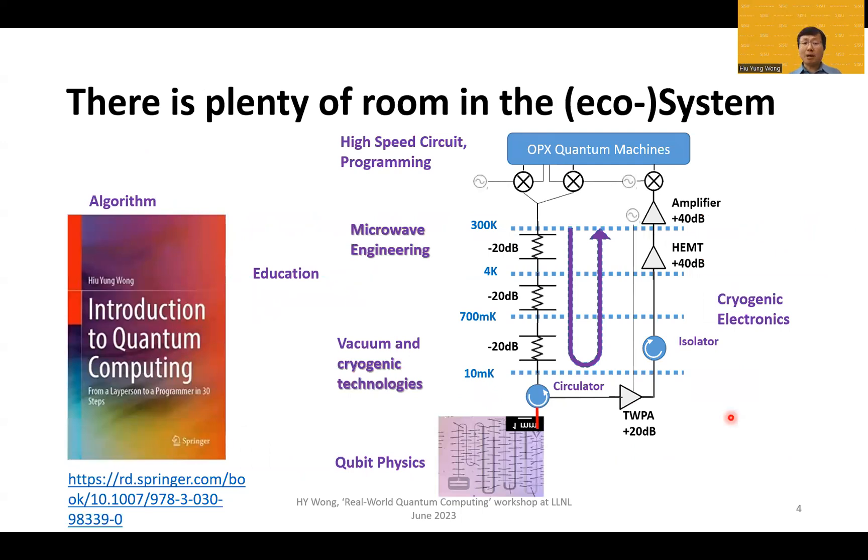In a quantum computer, there are plenty of rooms that we can contribute from algorithm design or education to high-speed circuit control. Here shows the quantum computer you are going to use in this workshop. It comes up with a lot of FPGA and programming using Python. Send out the pulse through a lot of microwave components, mixer, local oscillator, attenuator. These are all microwave engineering.